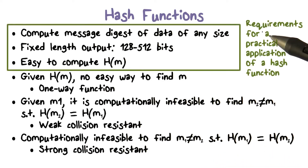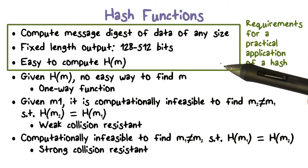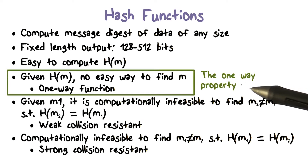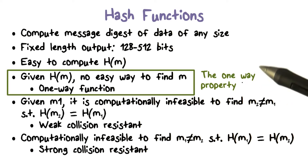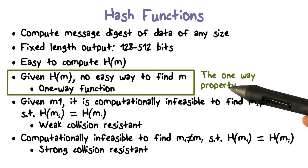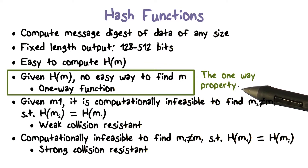The first three properties make hash functions practical for security applications. In particular, it can handle data of any size and it's very efficient to compute the hash. The one-way property says that it is quite easy to compute a hash value given a message, but it is virtually impossible to find the original input message given a hash value. This property is very important for message authentication.